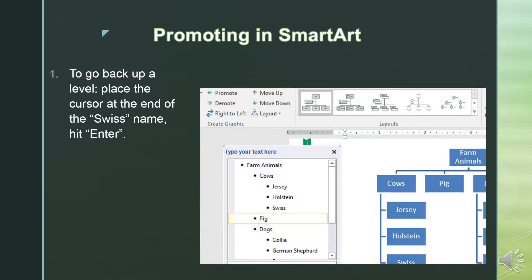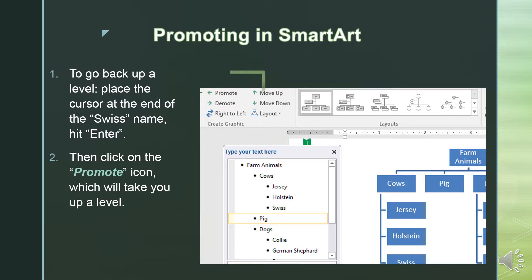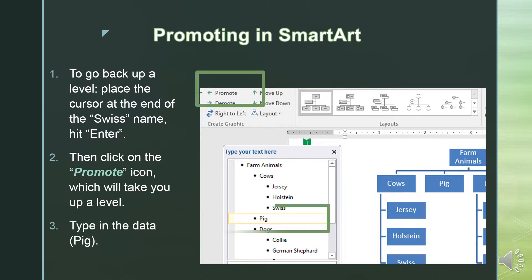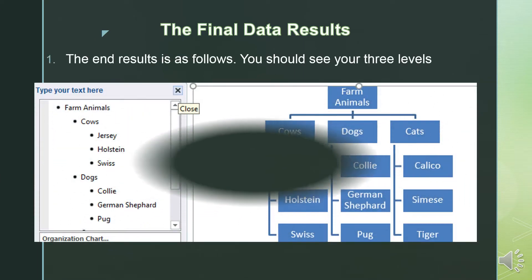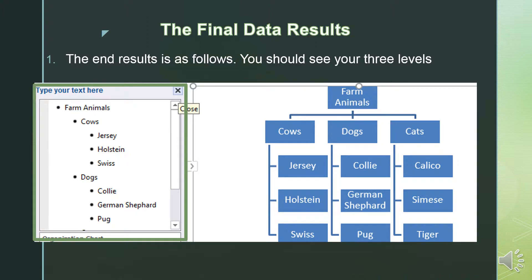Promoting in SmartArt: to go back up a level, place the cursor at the end of the word Swiss and hit enter. Then click on the Promote icon, which will take you up a level. Type in the data pig. The end result is as follows. You will see three levels: the first level, which is Farm Animals; the second level, which is cows, dogs, and cats; and the third level is the list that goes underneath each of the second level items.